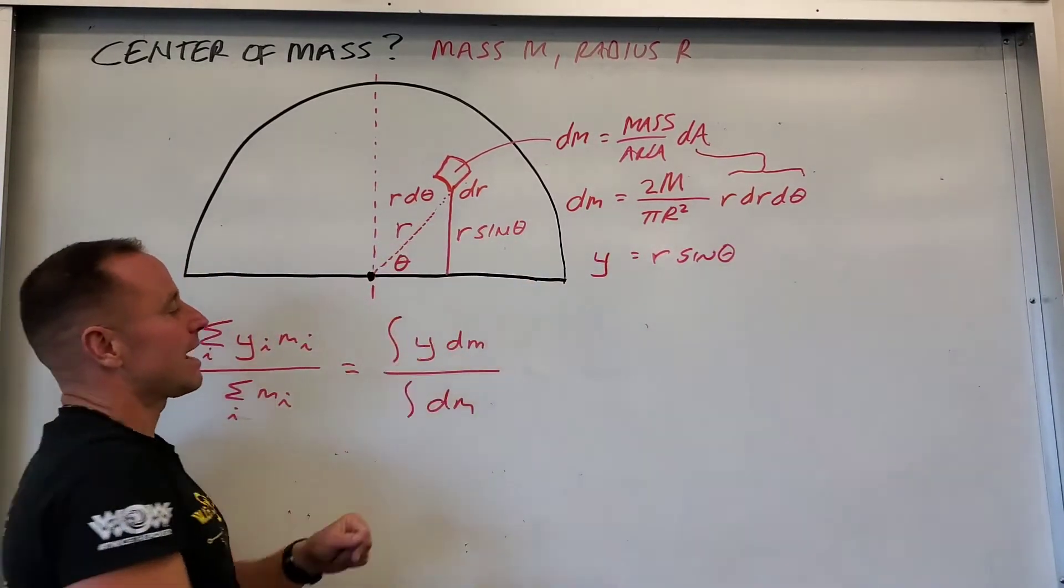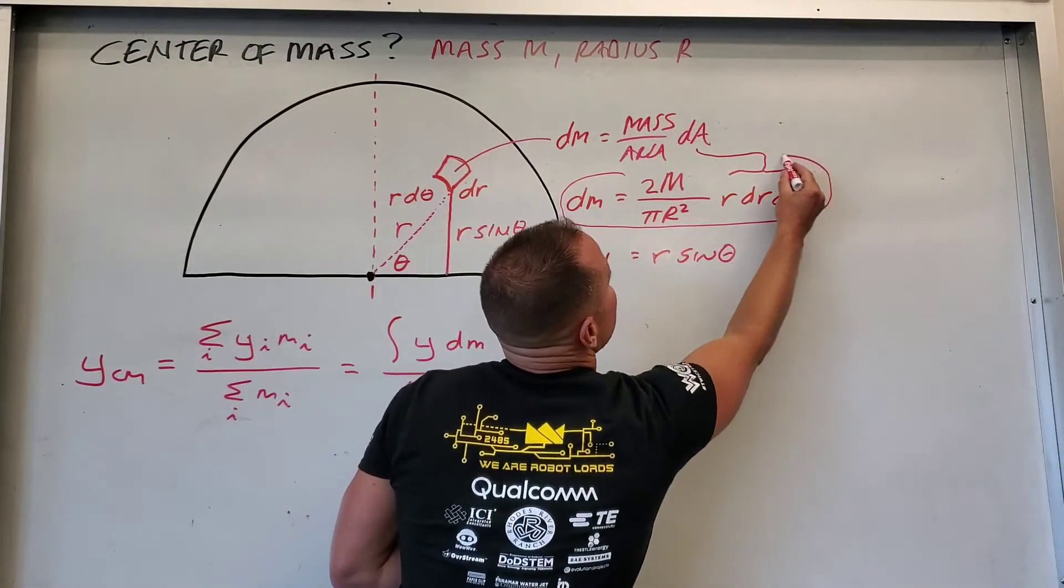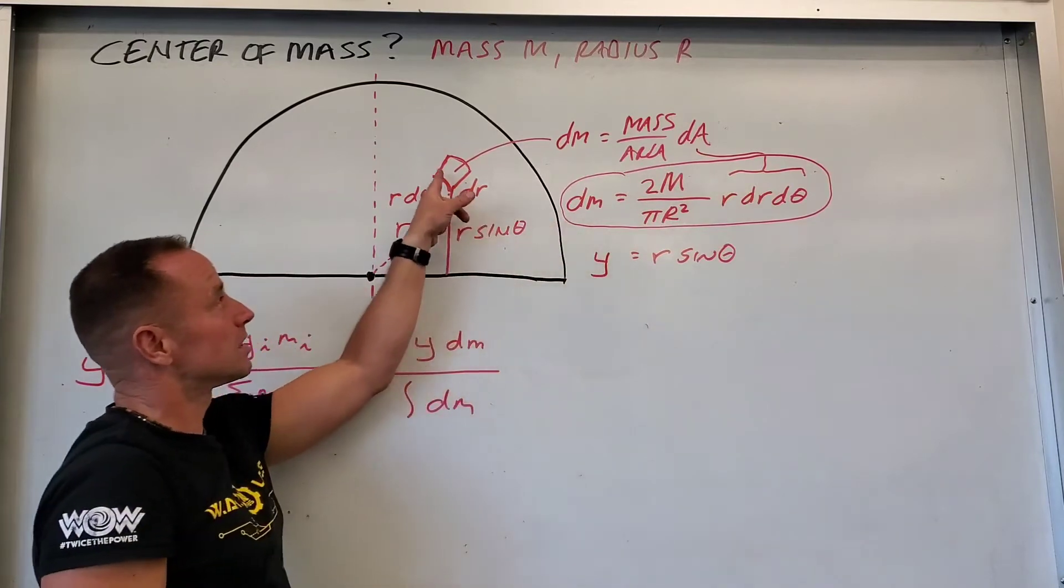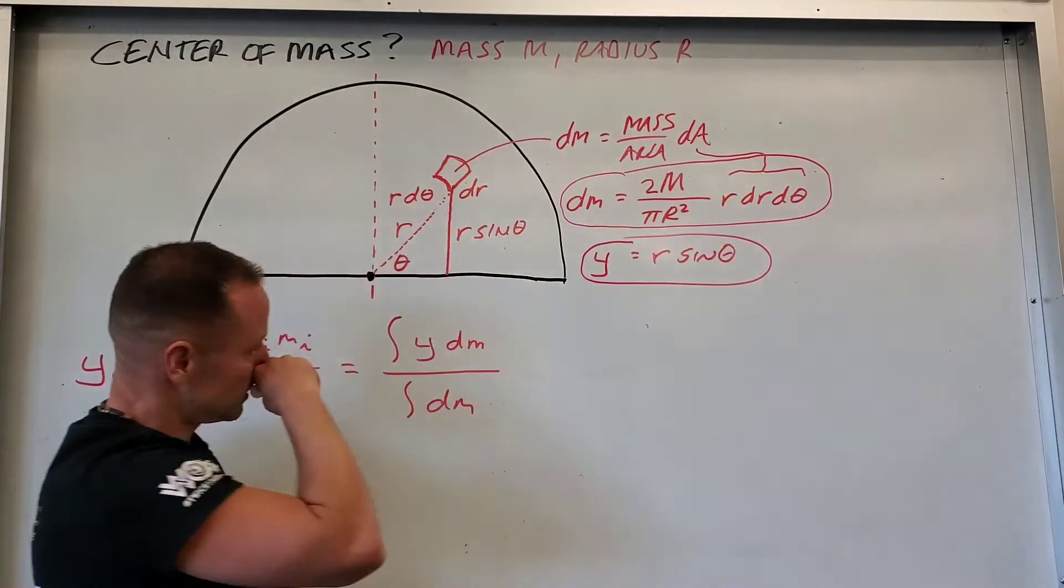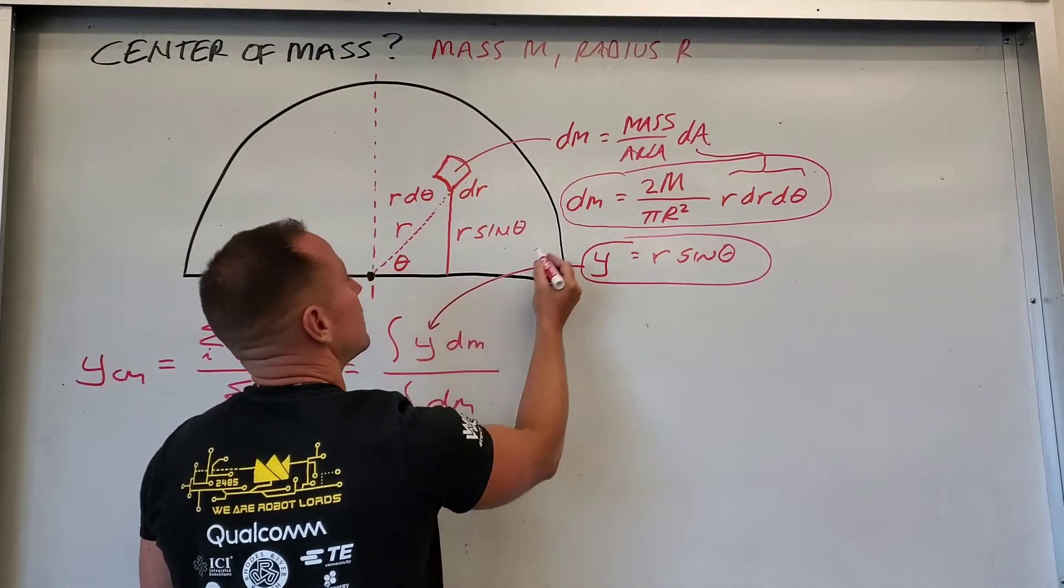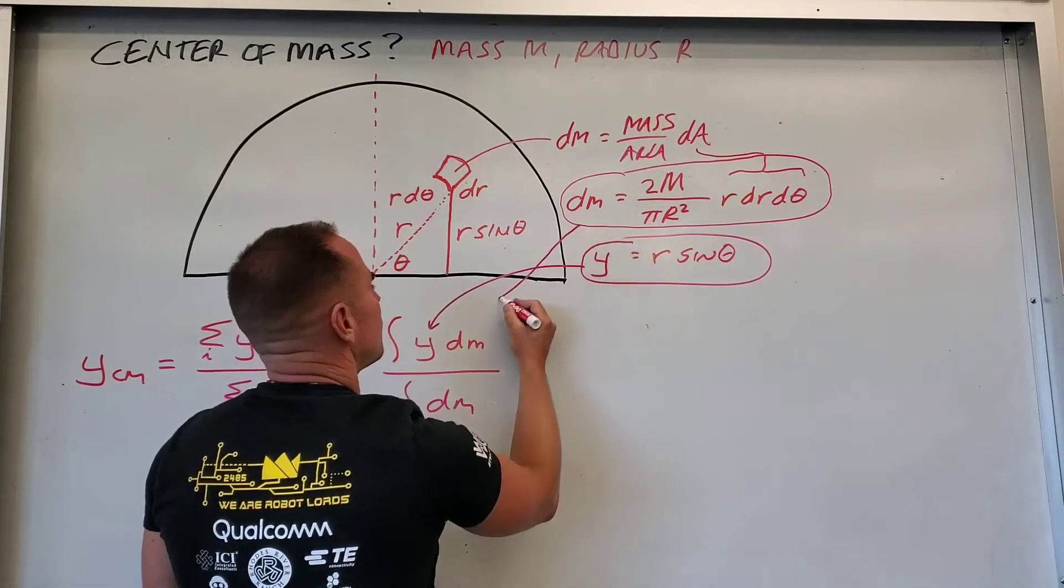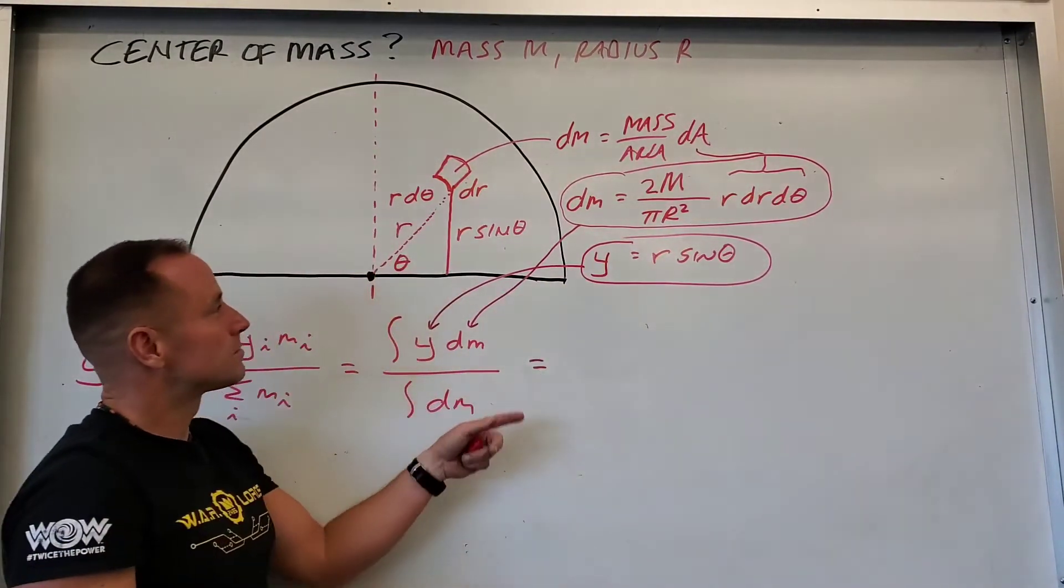And so then, given now that we have an expression for the mass of each little chunk and we have an expression for the y coordinate of each little chunk, we can put that in here. So the y coordinate we'll put in here and the dm we'll put in there. So let's go for it.